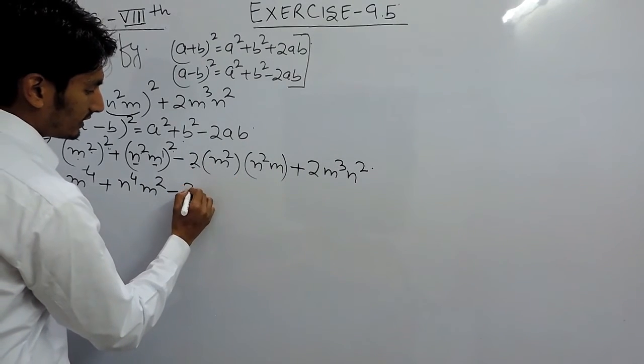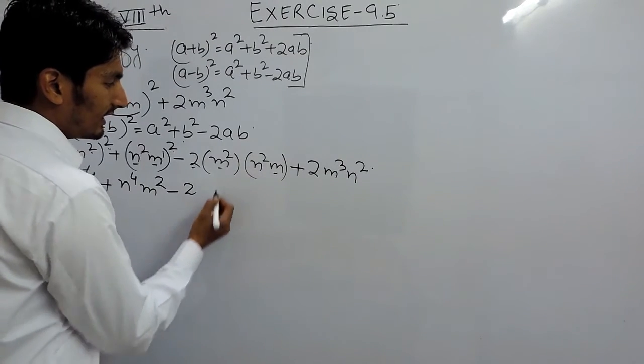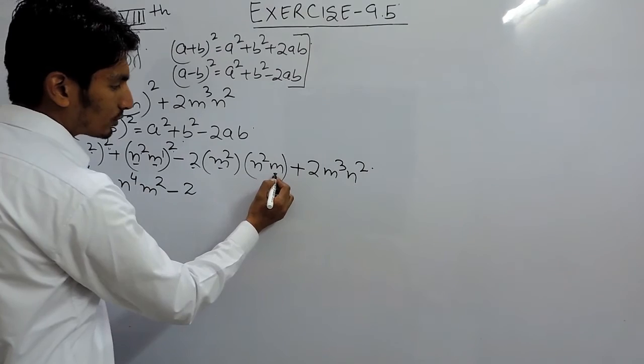There is only one constant, so 2 will remain as it is. Now I have to multiply m. Obviously like term will be multiplied by like term. We know that whenever the base are same, the power gets added.